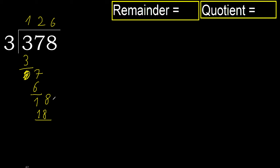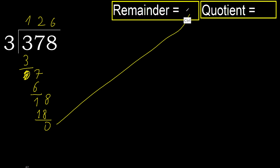Subtract. 18 minus 18 is 0. Next — that is not a number, therefore finish it.